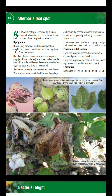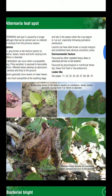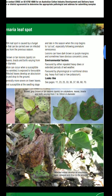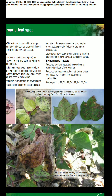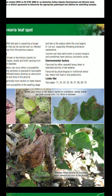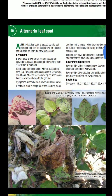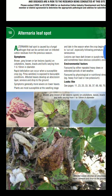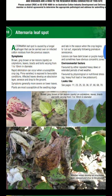The lesions vary from 1 to 10 mm in diameter. The affected leaves develop an abscission layer, undergo senescence, and drop to the ground. In the picture you can see brown and gray-tan lesions on cotyledons, leaves, bracts, and bolls varying from 1 to 10 mm in diameter.